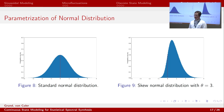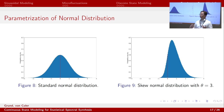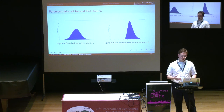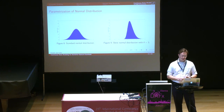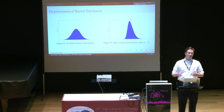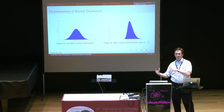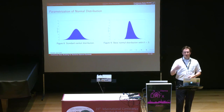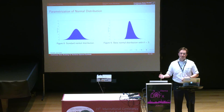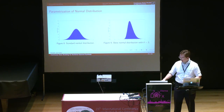Here we have two examples: one standard normal distribution on the left and one skew normal distribution on the right. Both have their location parameter set at 0 and the scale parameter set to 1. You can see that for theta equals 3, the probability density of the skew normal distribution leans more to the right side, making it more likely that the next parameter drawn from this distribution will be on the right side.